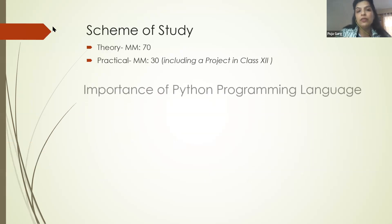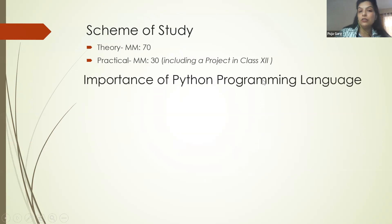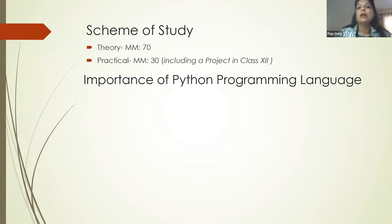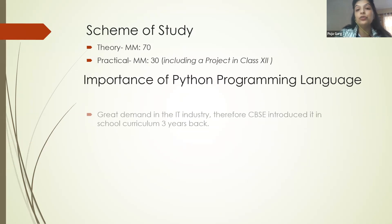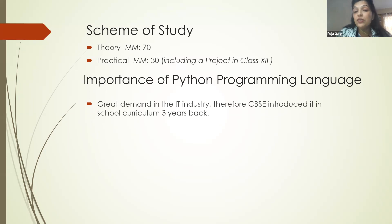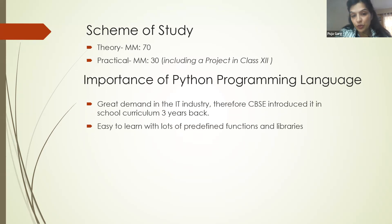The scheme of study has a theory exam for 70 marks and practical for 30 marks. In class 12, the practical includes a project based on a real-world application — you will develop a mini software or application program using Python and MySQL. Now, why is Python so important? CBSE introduced Python in the curriculum for class 11 and 12 three years ago because it is in great demand in the IT industry — it is the buzzword today.